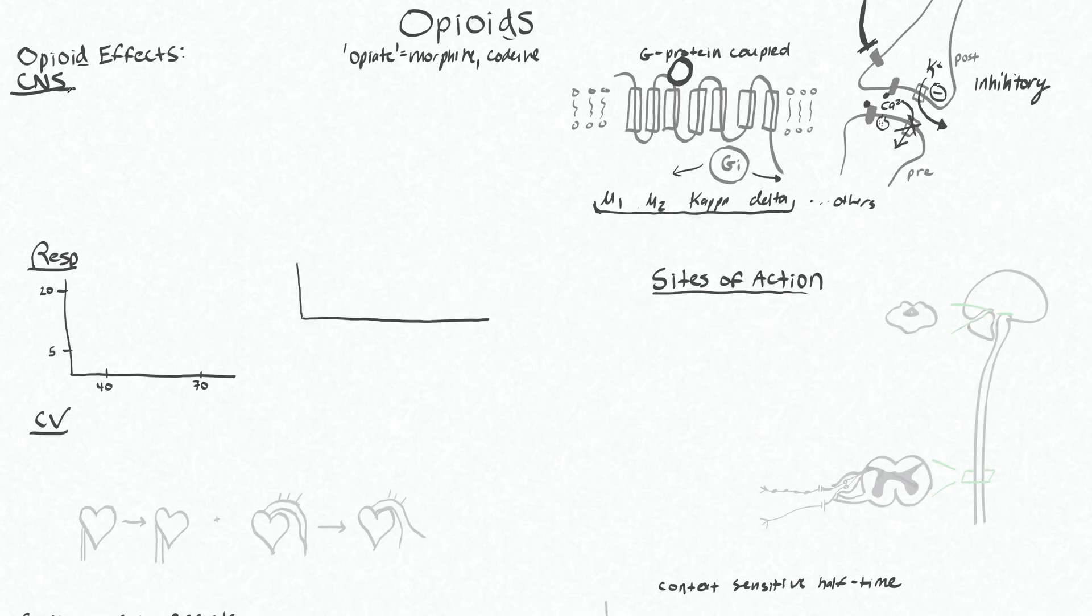So we'll talk about some of the general effects of opioids as a class of medications on the central nervous system. We basically give opioids to people because we want them to have an altered sensorium or decreased sensation to nociceptive information. So altered or decreased sensory perception of noxious stimuli.